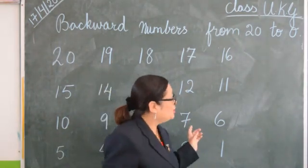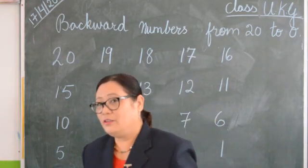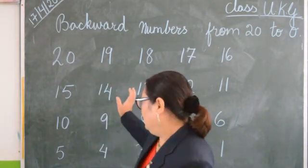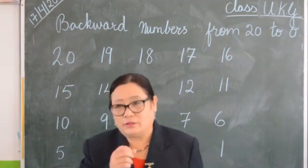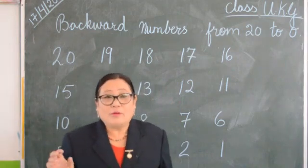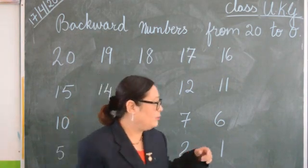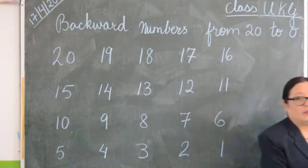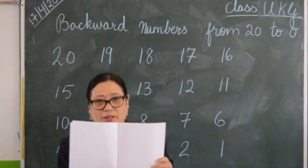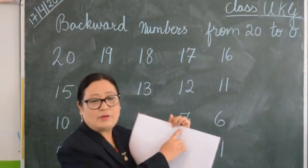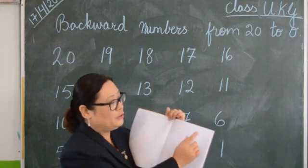You have to learn these backward numbers at home. Understood? And counting numbers also you have to learn. First you have to learn the counting numbers — I hope you all know those counting numbers — and after that you have to learn these backward numbers too. And you have to write also. You have to write in your math copy. Do you know which one is your math copy? That square one. Here you have to write the date. On the first line, write backward numbers from 20 to 0.